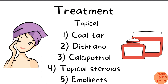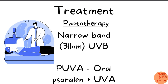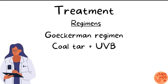Treatment of psoriasis includes topical drugs applied over the body. Commonly used ones are coal tar, dithranol (also called anthralin), calcipotriol, topical steroids, and emollients which decrease dryness of the skin. The next treatment modality is phototherapy — narrowband ultraviolet B rays within the wavelength range of around 311 nanometers can be used. There is also a technique called PUVA, which uses a photosensitizer drug called psoralen taken orally, combined with ultraviolet A rays applied topically, sensitizing the skin for better action of phototherapy. A popular treatment regimen is the Goeckerman regimen, combining topical coal tar with ultraviolet B rays.